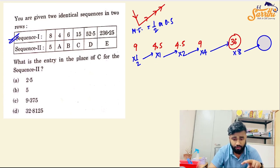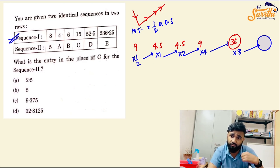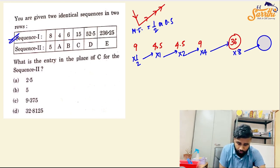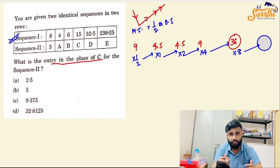You are given two identical sequences. Identical sequence means that the first one is the same pattern, same flow will follow. Now, for the second one, I have the first term. A, B, C, D, E. It means that there are variables. I will find out which value. What will be the entry in the place of C? I will find out just for C.